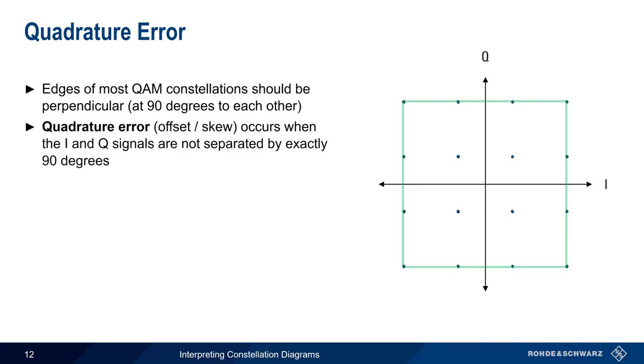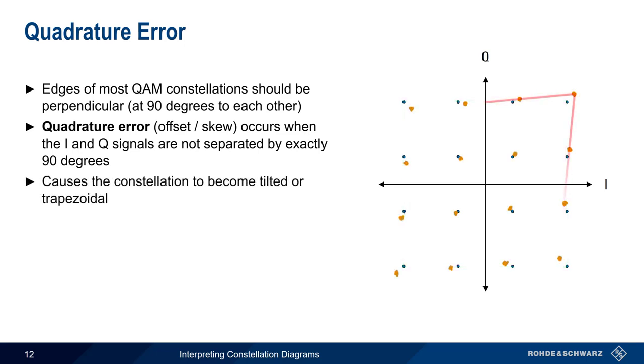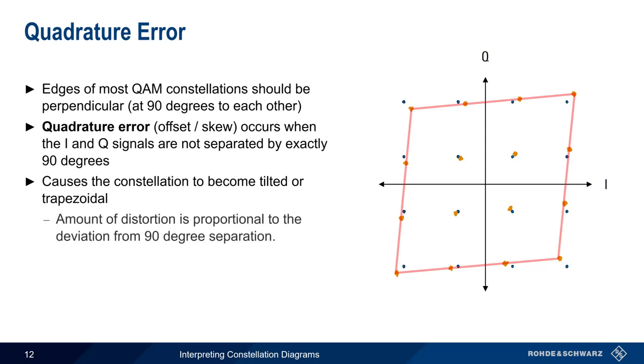Quadrature error, also sometimes called quadrature offset, or quadrature skew, occurs when the I and Q signals are not separated by precisely 90 degrees. This causes the constellation to become tilted, or trapezoidal. As the amount of deviation from this 90-degree separation increases, the constellation becomes increasingly tilted, leading to a higher probability of bit errors.